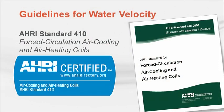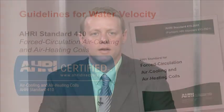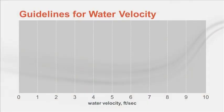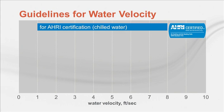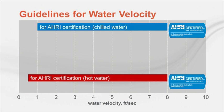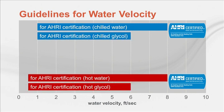Design guidelines for water velocity should take into account all of these risks. One source of guidance is AHRI, the trade association representing global manufacturers of air conditioning, heating, and refrigeration equipment. Most coil manufacturers rate and certify their performance using AHRI standard 410, which establishes testing and rating requirements for capacity, air pressure drop, and water pressure drop. For cooling coils, AHRI requires water velocity between 1 and 8 feet per second. For heating coils, 0.5 to 8 feet per second. The maximum is lowered to 6 feet per second for cooling coils using ethylene or propylene glycol.